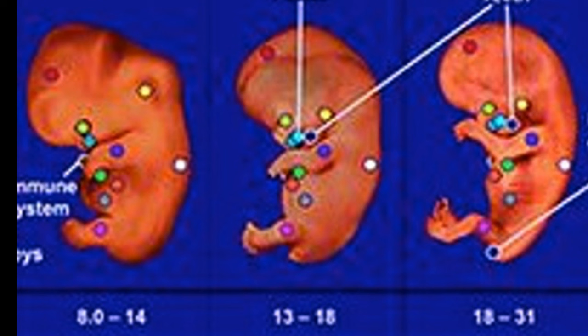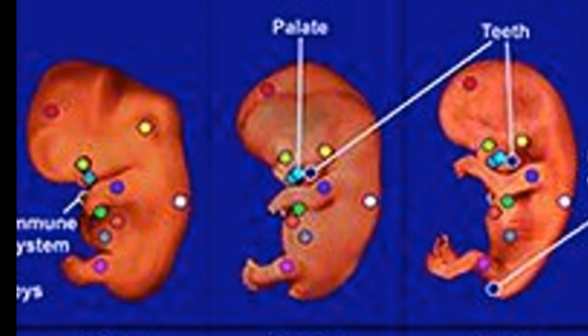In week 8, which marks the end of the embryonic period, the head is big and accounts for about half of the baby's length. The baby's tail disappears. The genitals develop but look similar between males and females, and the baby begins to pass urine into the amniotic fluid. The teeth begin to develop and other systems develop further. The baby is about 18 to 31 mm long.